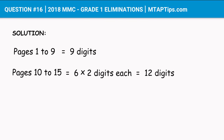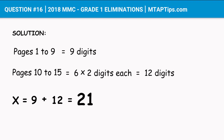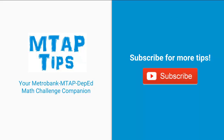Now we add the digits from pages 1 to 9 and pages 10 to 15. Let X be the unknown: X = 9 + 12 = 21. So the answer is 21 — there are 21 digits used to print the page numbers of a 15-page booklet. You can practice more with MTAB questions using our mobile app, with the download link in the description below.